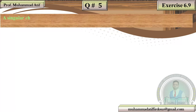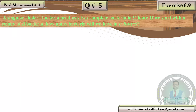Next, question number 5: A single-cell bacteria produces two complete bacteria in half an hour. If we start with a colony of bacteria A, how many bacteria will there be after 1 hour? By using this sequence, a colony of bacteria doubles every half hour.